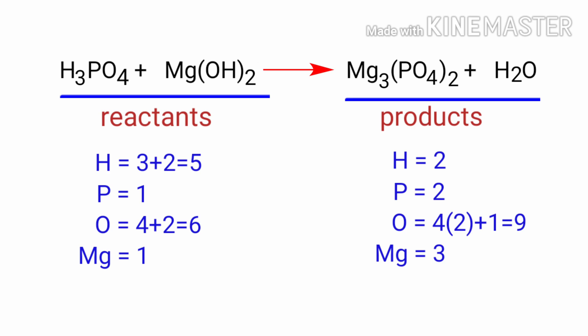On the products side there are 2 hydrogen atoms, 2 phosphorus atoms, 9 oxygen atoms, and 3 magnesium atoms present. The number of atoms are not balanced on both sides.